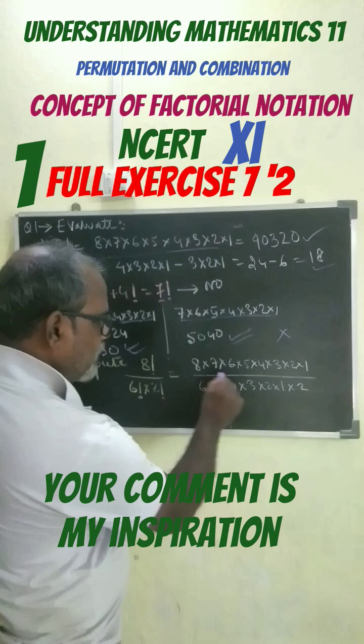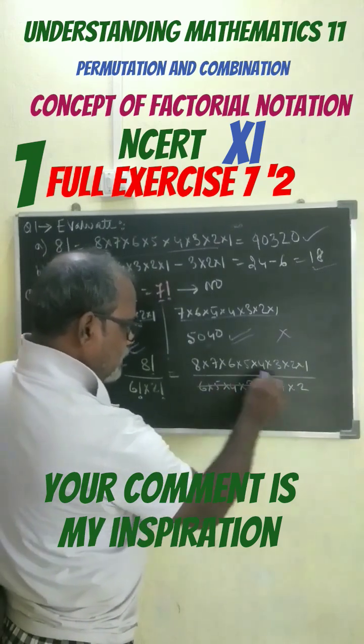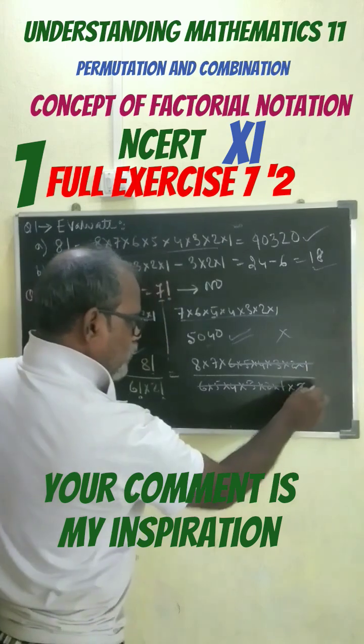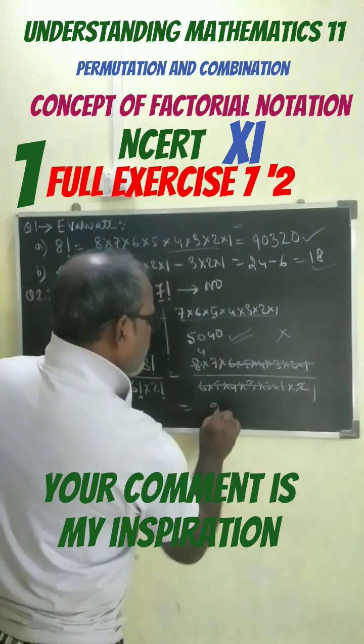8 factorial can be written in this format. 6 factorial gets cancelled with this. 2 ones are 2, 2 twos are 4, 4 twos are 8, 4 sevens are 28.